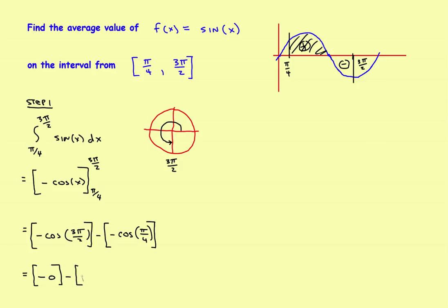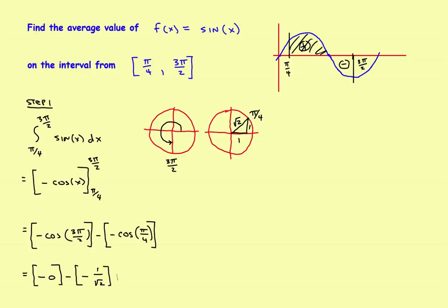Then for the pi over 4 angle, that's a 45-degree angle. From the special angles, the sides are 1, 1, and square root of 2, so cosine equals x over r, which is 1 over the square root of 2. Since cosine of 3π over 2 is zero and two negatives make a positive, the integral turns out to be 1 over the square root of 2. That's the area — you're halfway through the problem.